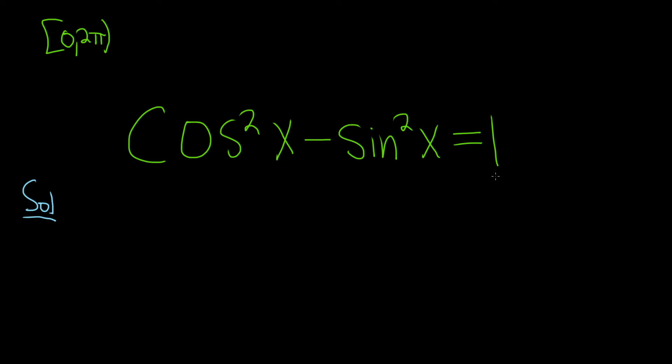So it would be really nice if the right-hand side was a 0, because we know that the left-hand side is the difference of squares. So you can write this as cosine x minus sine x times cosine x plus sine x. But it's equal to 1 on the right-hand side, so it's not really going to help us. So instead, what we're going to do is we're going to use a trig identity.